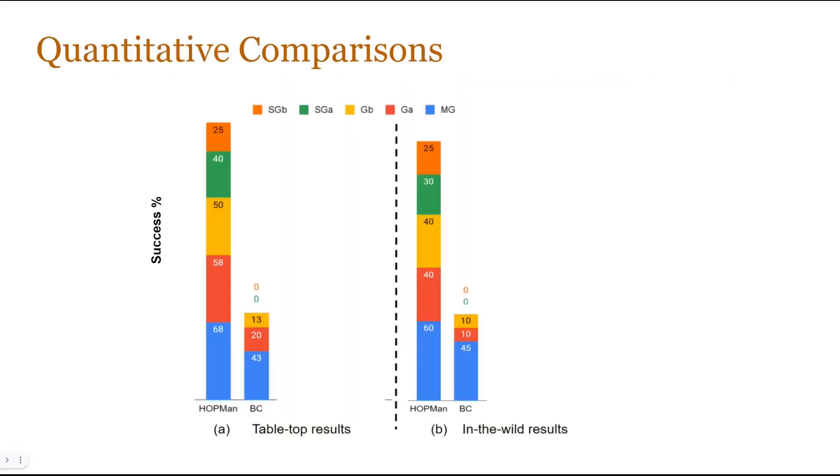Looking at the quantitative results, we can see that HOPMan achieves much higher success rates compared to a goal-conditioned behavior cloning baseline that is trained on only the robot data, indicating that the predicting and translating of human plans are helpful for generalization.